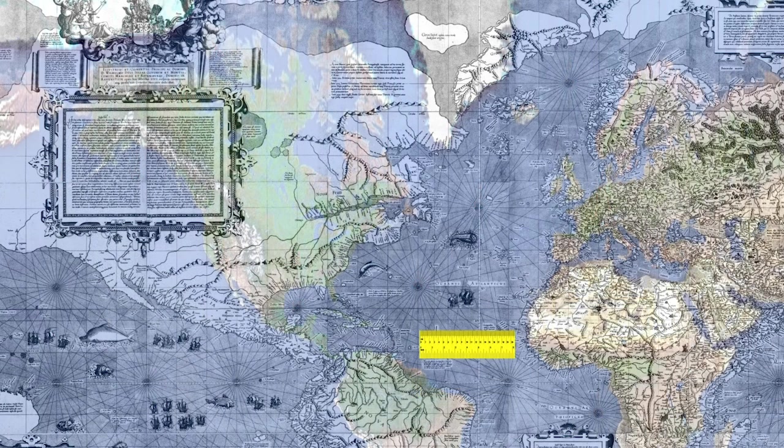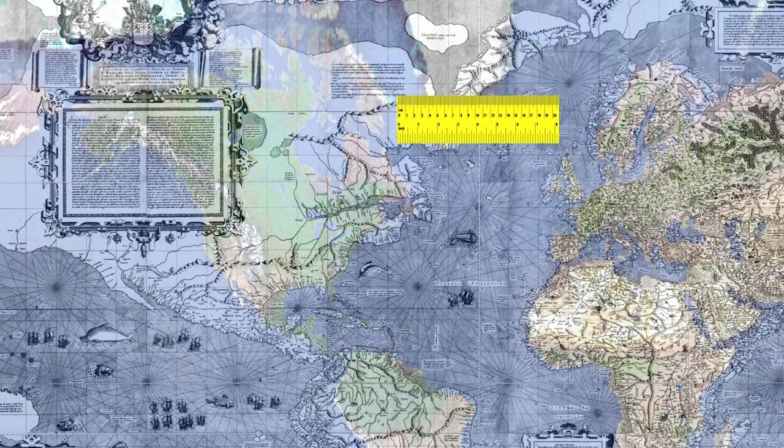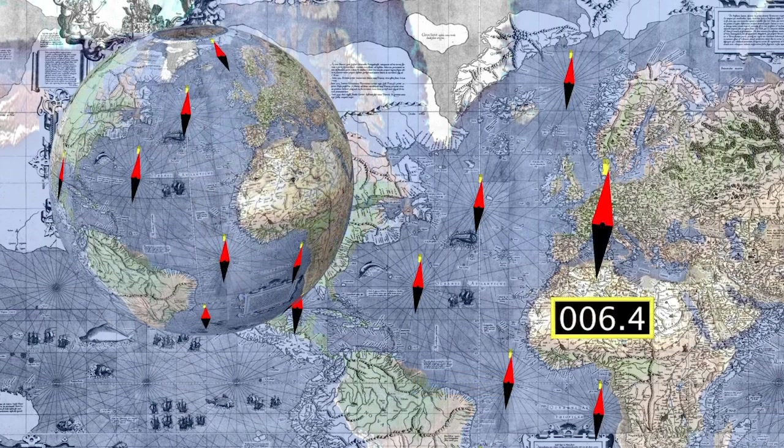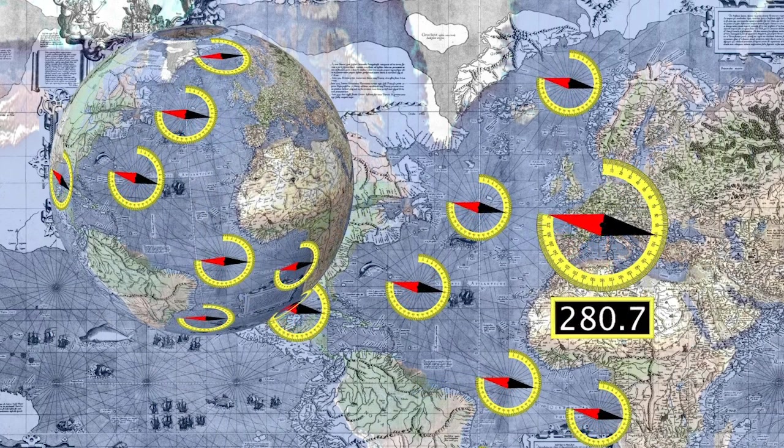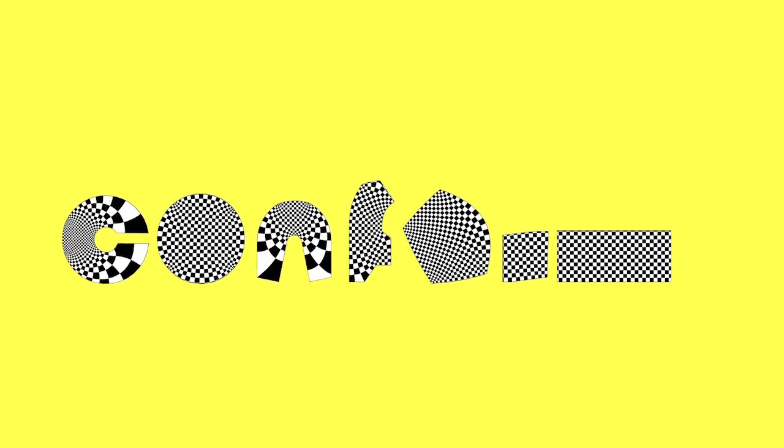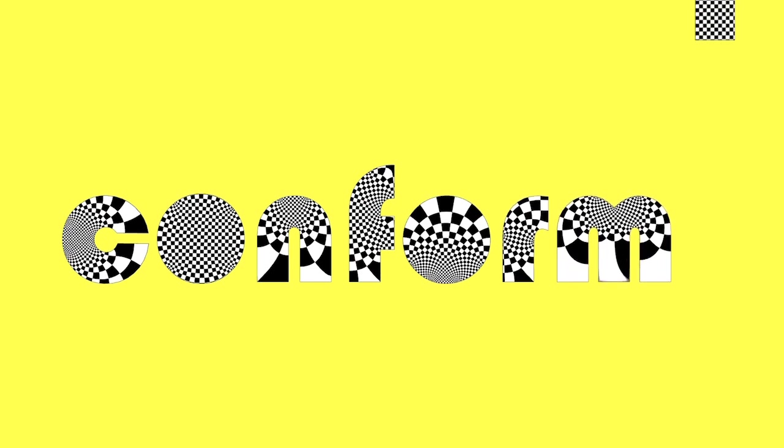Although distances are distorted as one moves north and south on the map, angles are always correctly shown. A map that preserves angles is called conformal. Conformal maps have turned out to be of fundamental importance in mathematics. This movie presents highlights of their development since Mercator's time.